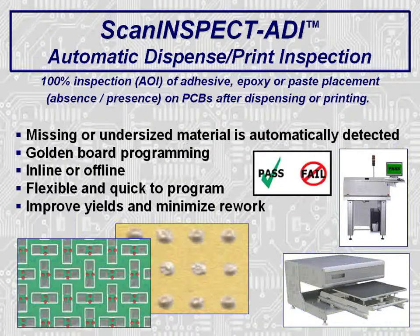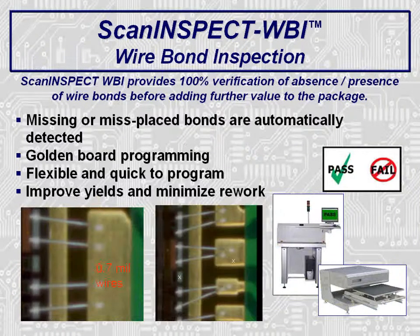ScanInspect ADI, dispense or print inspection, can be done to check for undersized deposits. The system utilizes golden board programming for fast and easy setup. Find adhesive problems after printing or dispensing instead of at the end of the line — improve yields and minimize rework. This system is even lower cost than the SPI system. ScanInspect WBI can perform 100% inspection of presence-absence of wire bonds. Images of a 0.7 mil or 18 micron diameter wire show the powerful capability of the system to inspect extremely small features.